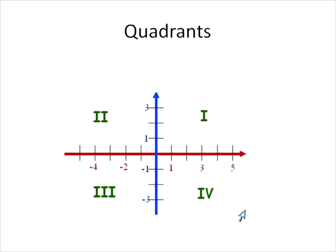So quadrant one, two, three, and four. And those are going to be important as well as we move into translations or transformations. We're going to do translations, reflections using all the information that we talked about just now.